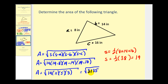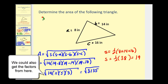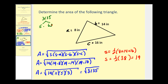Depending on your class, you may need to write this in simplified radical form or get a decimal approximation. To simplify, we check for perfect square factors using a factor tree. Three thousand one hundred thirty-five ends in five, so it's divisible by five: five times six hundred twenty-seven. The digit sum of six hundred twenty-seven is six plus two plus seven equals fifteen, which is divisible by three, so we get three times two hundred nine. Since eleven times nineteen equals two hundred nine, the full factorization is five times three times eleven times nineteen. There are no perfect square factors, so the radical does not simplify.